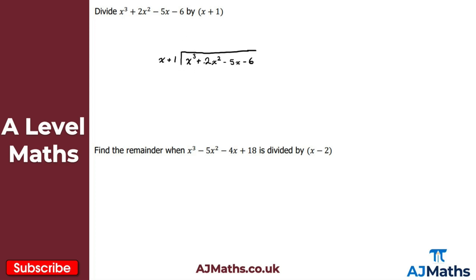The first thing we do is take the highest power term, which is x cubed, and divide it by the highest term from the divisor, which is x. So x cubed divided by x gives us x squared. I now take that x squared and multiply it by the divisor x plus 1: x squared times x gives x cubed, and x squared times 1 gives positive x squared.